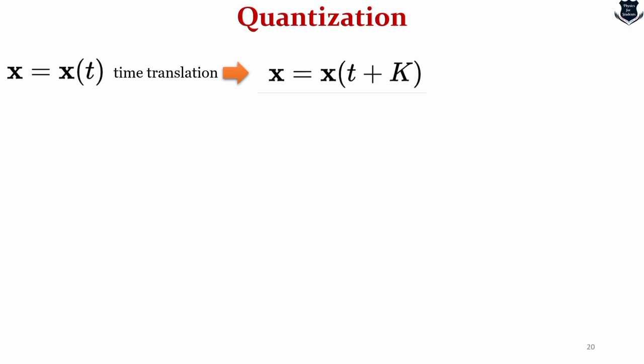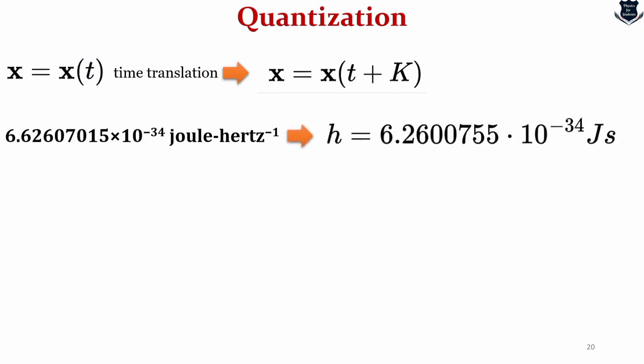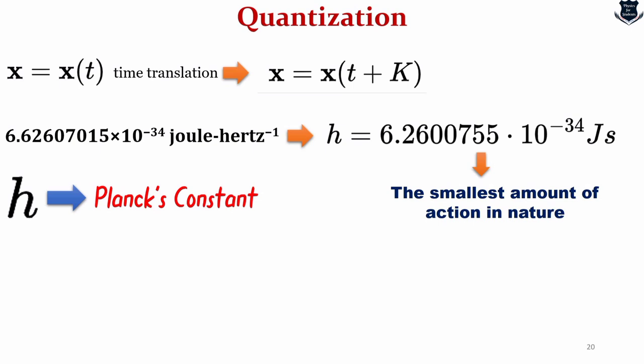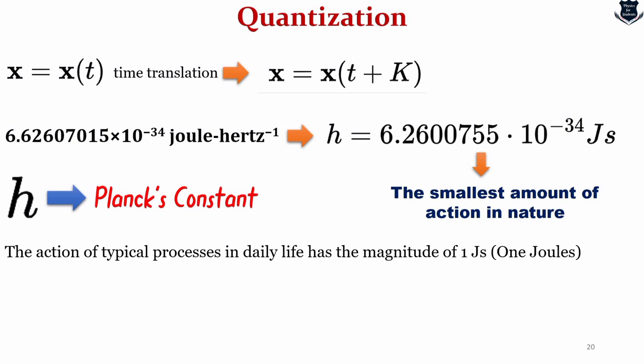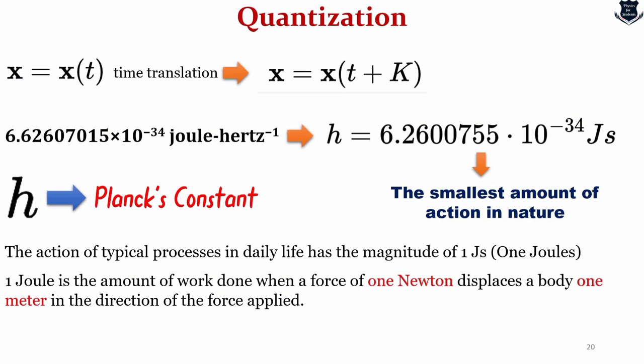Now if we take Planck's law, according to Planck, the smallest amount of action is this, which I've converted to joules per second, where we can say one joule is basically one kilogram per meter square per second square. This is what we call the smallest amount of action in nature. We find the universal constant h, the famous Planck's constant. This Planck's constant is very important. Let's observe that the action taken of a typical process in daily life actually has a magnitude of one joule. Therefore, the Planck's constant is very, very tiny. One joule is the amount of work done when a force of one newton displaces a body one meter in that direction. What we can understand from here is that the Planck's constant is something which is very, very tiny.